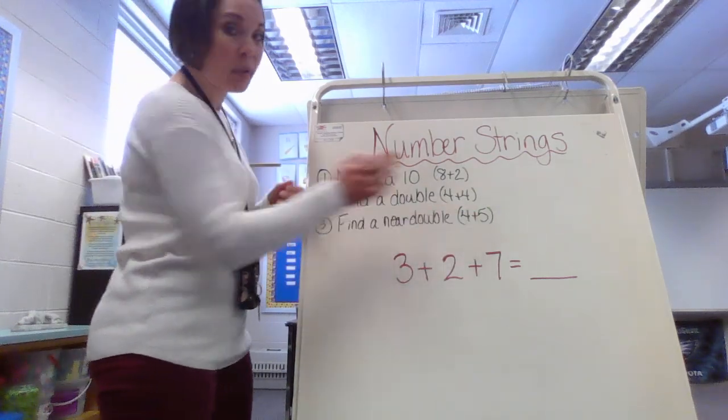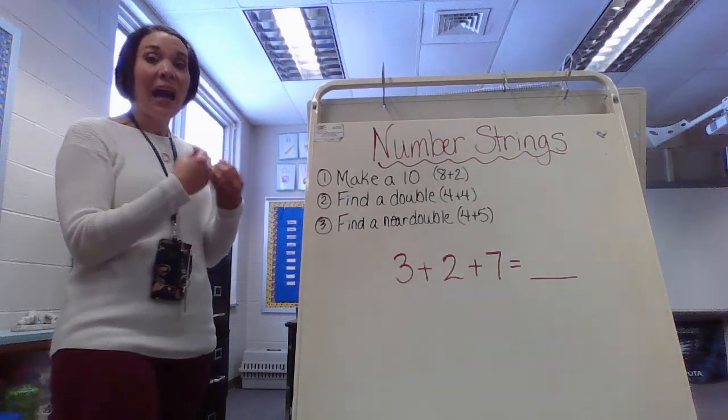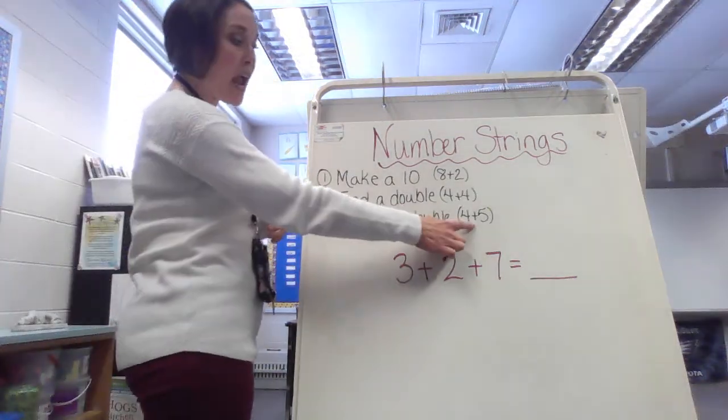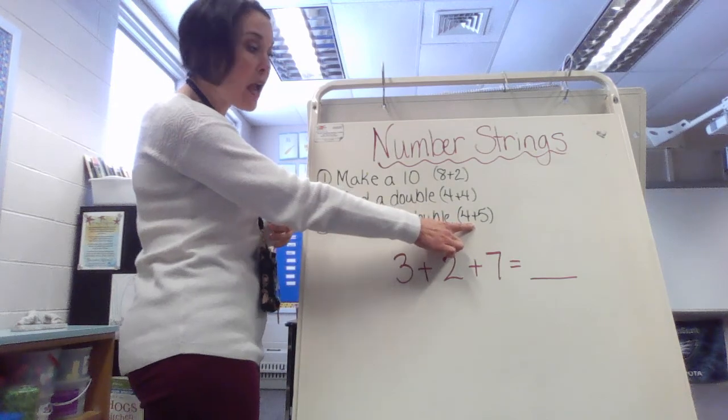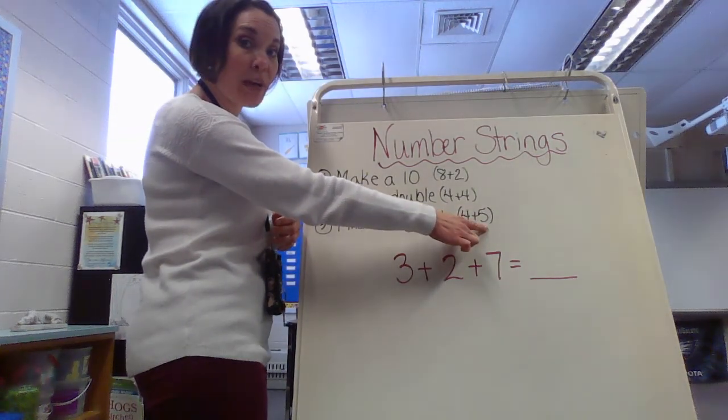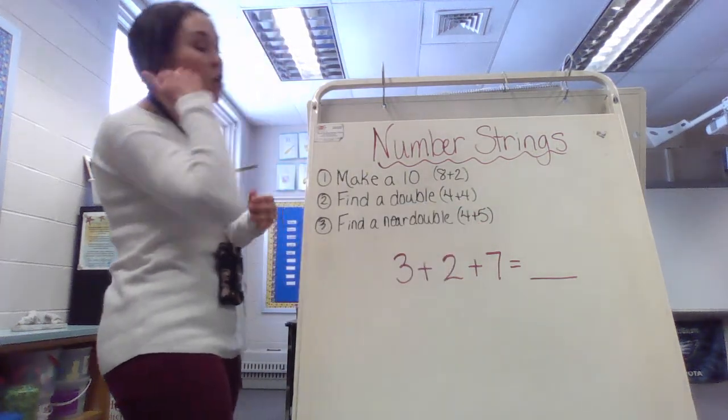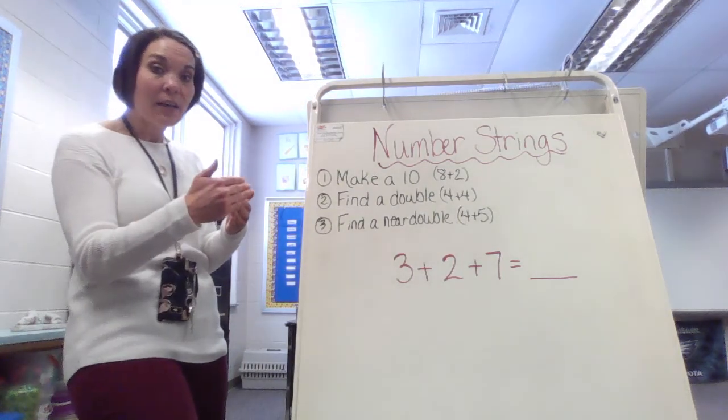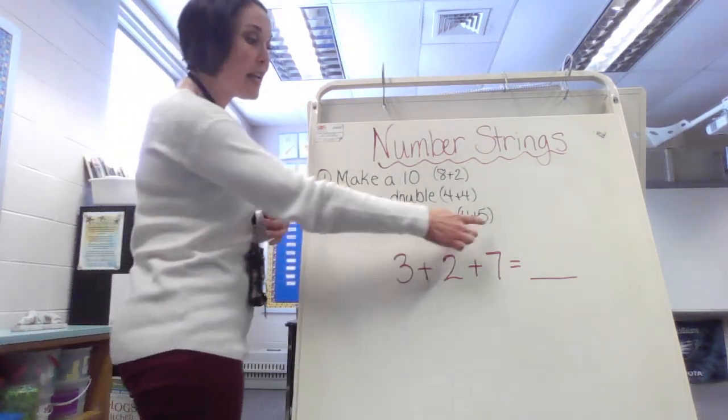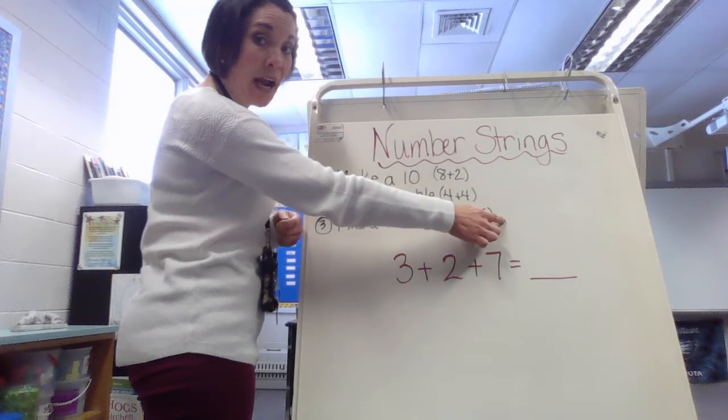So what you're going to do with the near double, you can take a doubles fact and either add one or take one away in order to figure out what your solution or your sum for that particular near double would be. So let's take a look at the 4 plus 5. I could take the lower number. I could say 4 plus 4 and 1 more because that's where you get the 5. So 4 plus 4 is 8 plus 1 more is 9. So 4 plus 5 is 9.